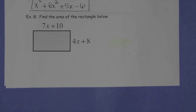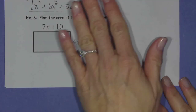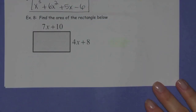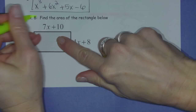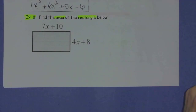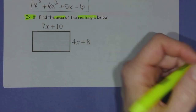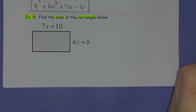Hey everybody, we're back for our second video under the umbrella of multiplying polynomials. We did the first seven examples in the first video and now we're on to example eight, picking up right where we left off. For example eight, find the area of the rectangle below. You may want to pause the video — feel free to try this on your own, then come back and check your work.